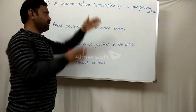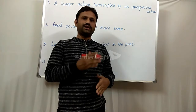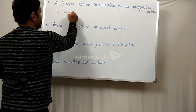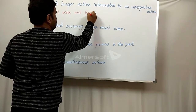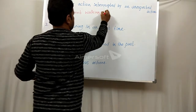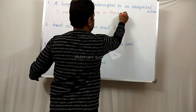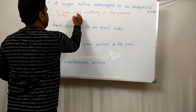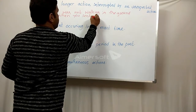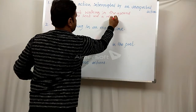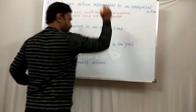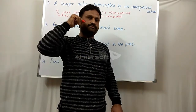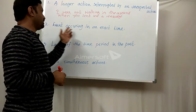The first case is a longer action interrupted by an unexpected shorter action. For example: 'I was not walking in the ground when you sent me a message.' Next: 'I was not running in the garden when you called me.'